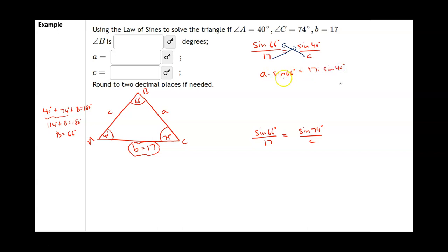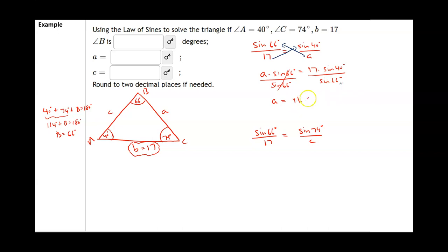So I get: a times sine of 66 degrees equals 17 times sine of 40 degrees. Dividing both sides by sine of 66 degrees isolates a. Typing 17 times sine of 40 degrees over sine of 66 degrees into the calculator gives a ≈ 11.962. Now angle B is 66 degrees and a ≈ 11.962; all that remains is to solve for c.